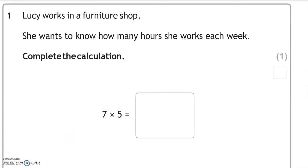Lucy works in a furniture shop. She wants to know how many hours she works each week. Complete the calculation. Seven times five is 35. You could add seven lots of five or five lots of seven if you want to break it down and you don't know this by heart.